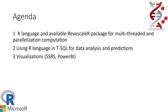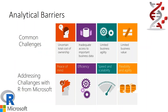What we're going to talk about today: we're going to introduce the RevoScale package, which is a highly parallel multi-threaded computational package available with SQL Server. We're going to talk about how to integrate it into Transact-SQL, and cover a couple of visualizations and how to represent your data. But let me first talk about the analytical barriers that Microsoft had to challenge when discussing R integration.